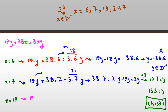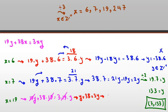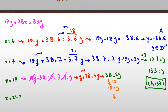Third case, x=19: substituting gives 19y + 38×19 = 3×19×y. Dividing both sides by 19: y + 38 = 3y. Taking y to the right: 38 = 2y, so y=19. We found another answer: x=19 and y=19.